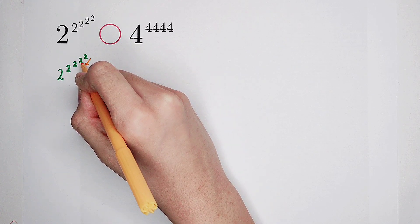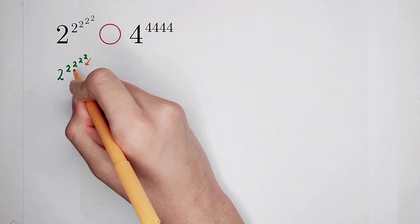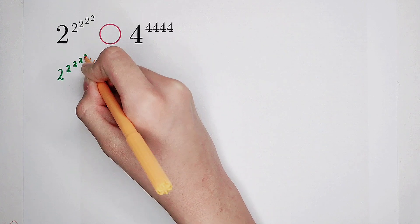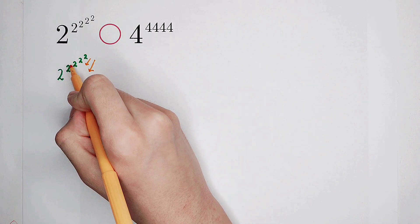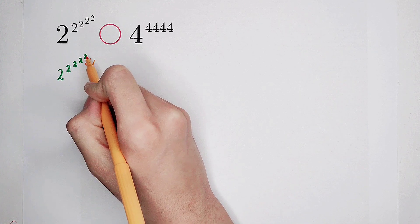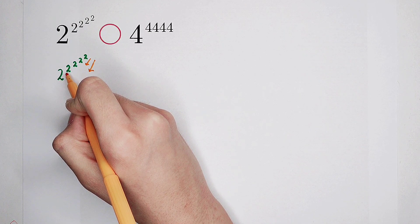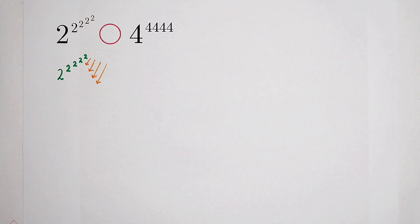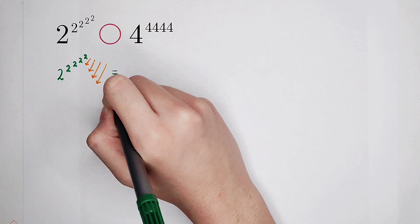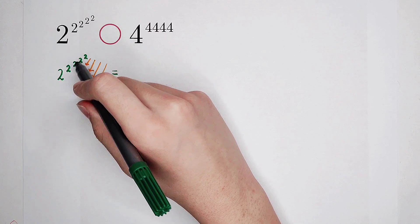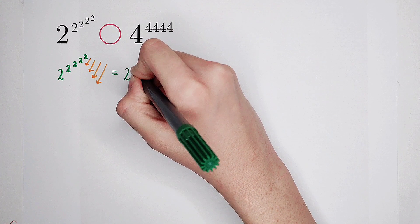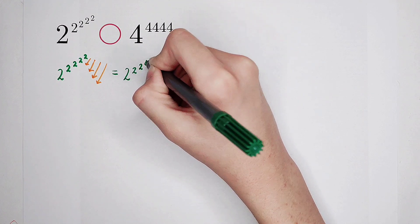First, 2 to the power of 2 is the exponent of these two. Then we calculate 2 to the power of 2 to the power of 2, and this is the exponent of the next 2. We calculate the whole thing at last. It equals: first, 2 squared is 4. So the highest exponent is 4.